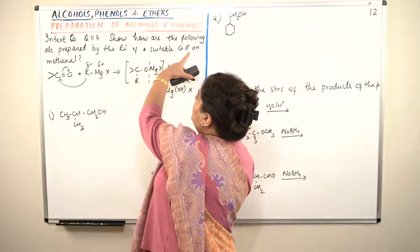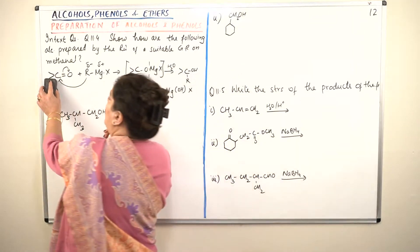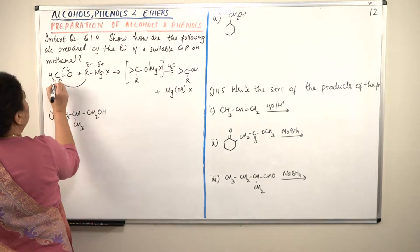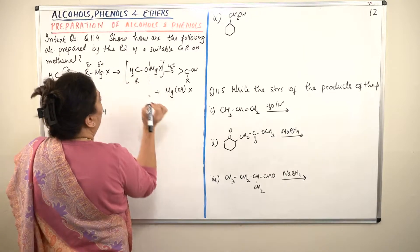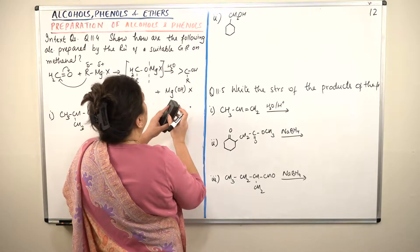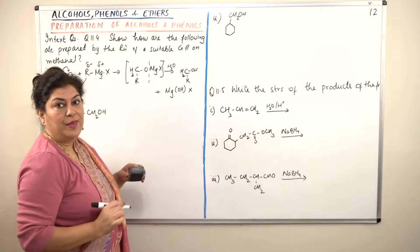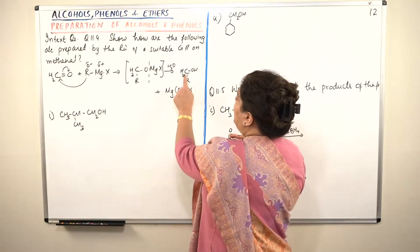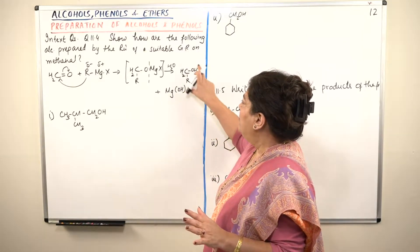We have been asked that a suitable Grignard reagent has to be used on methanal. So this is H2, both of these are hydrogen. So this is H2, this also becomes CH2. And here this also becomes CH2. So now you have to, you have been given this product in the question.